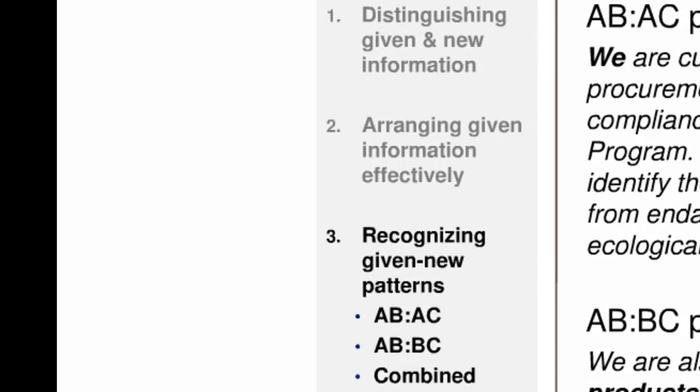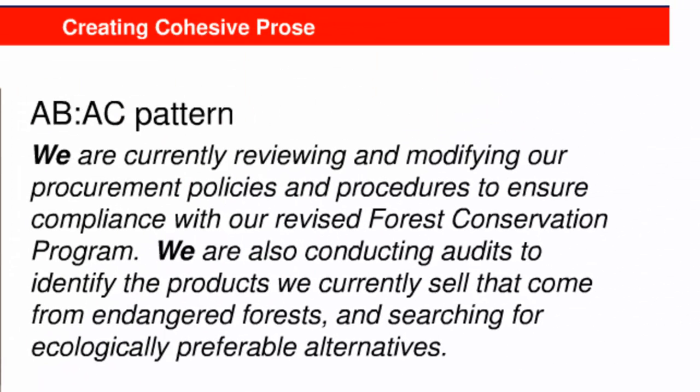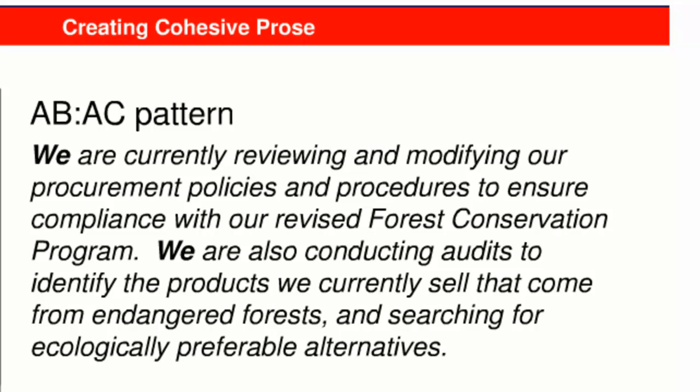The third aspect of cohesion you need to understand involves the cohesive patterns for arranging given and new information among sentences. The first pattern creates a link between two sentences by repeating the same information in the subject slot of both. In our example, the pronoun 'we' is used in the subject slots for each sentence: the first sentence 'we are currently reviewing,' the second sentence 'we are also conducting.' The predicate in both sentences presents new information. This pattern is called A-B-A-C, where the repetition of A from one sentence to the next creates the link.